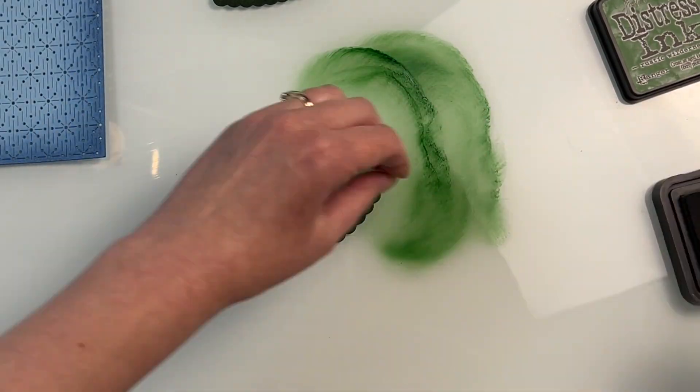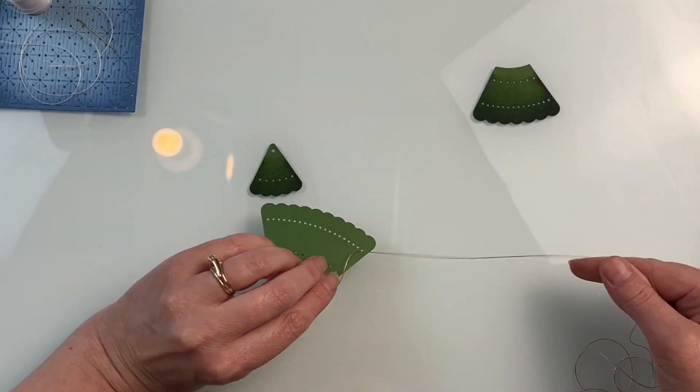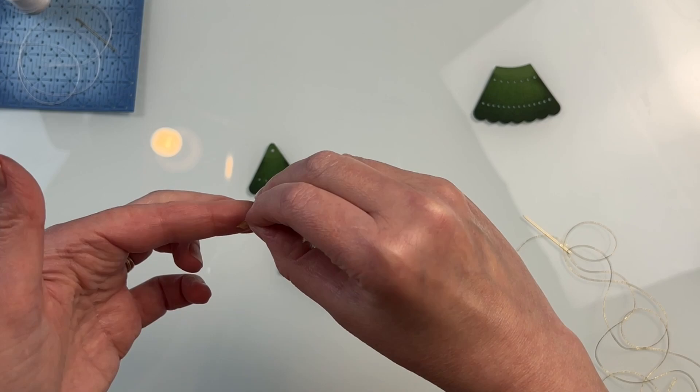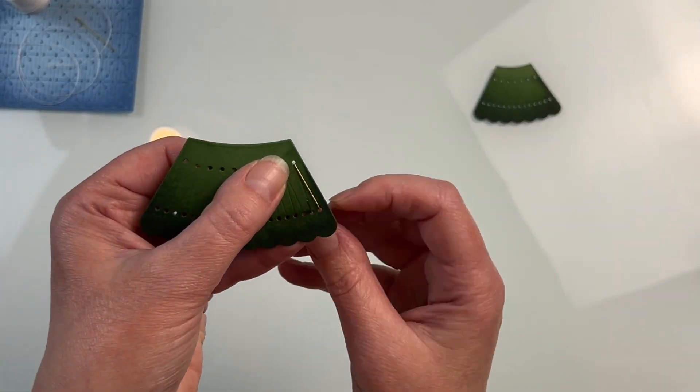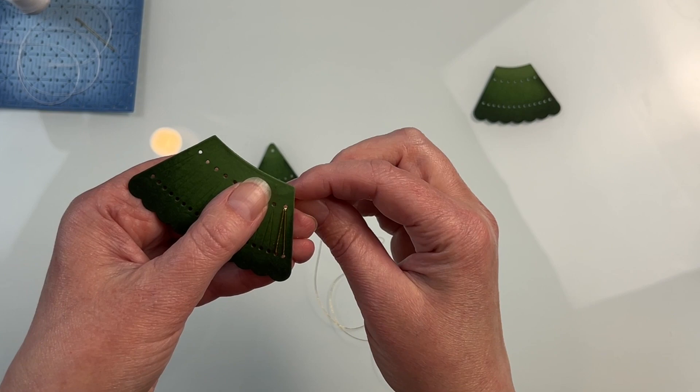There are three different parts to create just the tree alone, and then each one of those trees has a border along the bottom to add a little bit of extra detail, plus there's the different pieces for the star at the top.